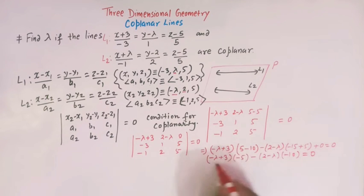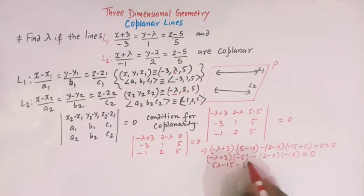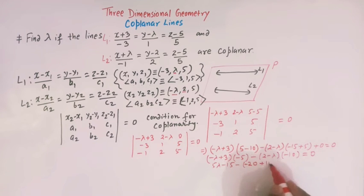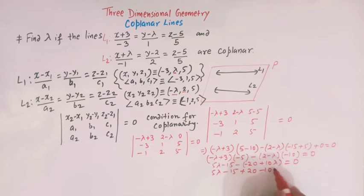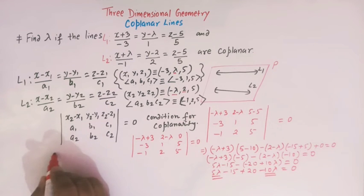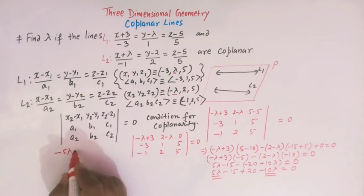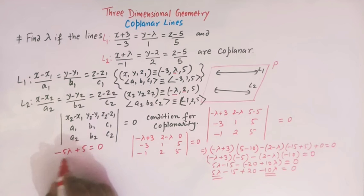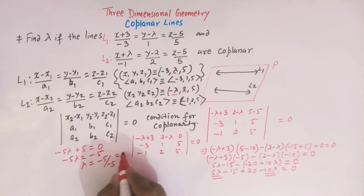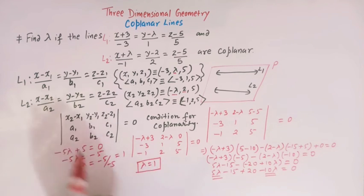Simplifying: 5λ - 15, then -10(2 - λ) = -20 + 10λ, giving 5λ - 15 - 20 + 10λ... Wait — combining: (-λ + 3)(-5) = 5λ - 15, and -(2 - λ)(-10) = -20 + 10λ... Collecting terms: 5λ - 10λ = -5λ and 20 - 15 = 5, so -5λ + 5 = 0... corrected: -5λ = -5, therefore λ = 1.